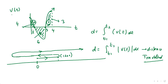Between 0 to 1, distance and displacement are both 4. Between 0 to 3, distance is 4 + 6 = 10, but displacement is 4 - 6 = -2, meaning you went 4 units right and then 6 units left, ending up 2 units left of the origin. Then traveling 3 more units right puts you 1 unit to the right of the origin at 4 seconds.